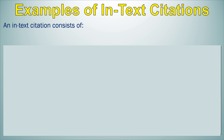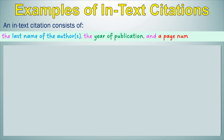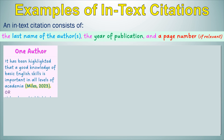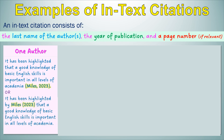Let's look at some examples of in-text citations. An in-text citation consists of the last name of the author or authors, the year of publication, and a page number if relevant. So if you have one author, it will look something like: 'It has been highlighted that a good knowledge of basic English skills is important in all levels of academia' (Miles, 2023), or: 'It has been highlighted by Miles (2023) that a good knowledge of basic English skills is important in all levels of academia.'